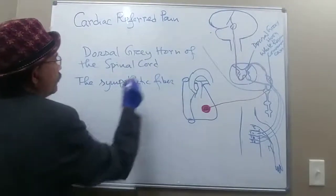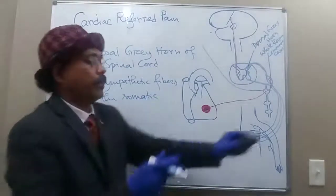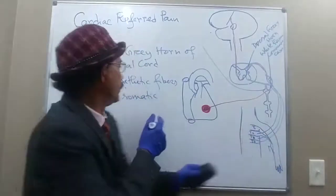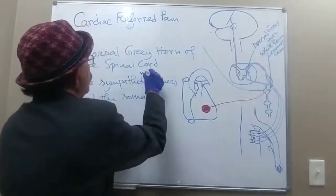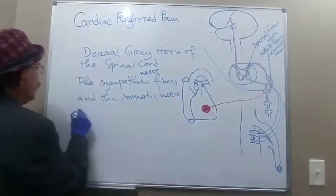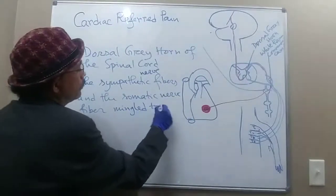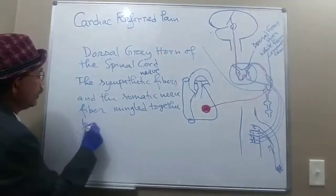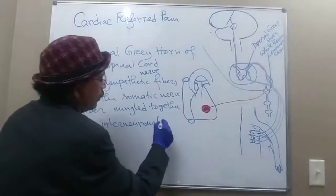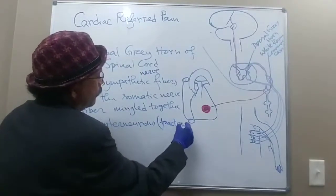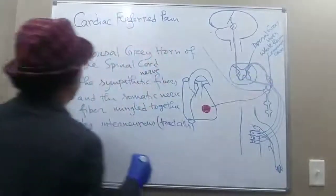What happens here is that the somatic nerve and the autonomic (sympathetic) nerve come together in the dorsal grey horn. They mingle together by interneurons, also called tract cells.